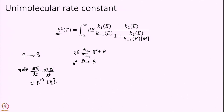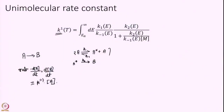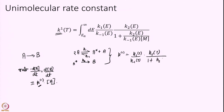When we define this rate, we are not assuming A going to B is elementary. Therefore K1 is not a simple number — it depends on the concentration of A. When we work out the kinetics and find K1, what we get involves K1/K−1, and these are all functions of temperature.